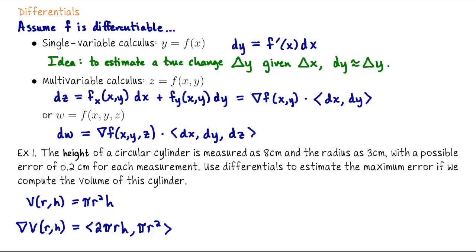We're working with r = 3 and h = 8. So dV = ∇V(3,8) · ⟨0.2, 0.2⟩, where the possible error for both measurements is 0.2. Plugging in, the gradient is ⟨2π(3)(8), π(3)²⟩ = ⟨48π, 9π⟩.